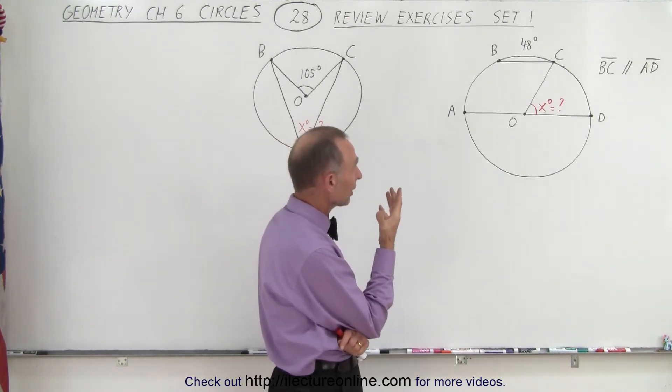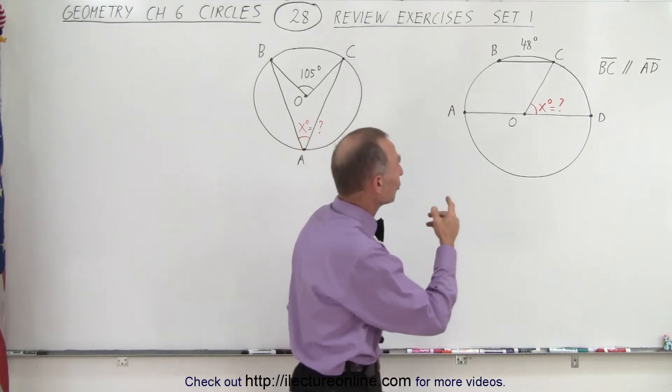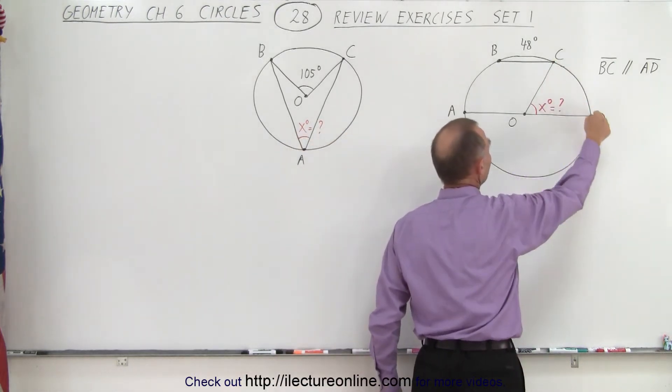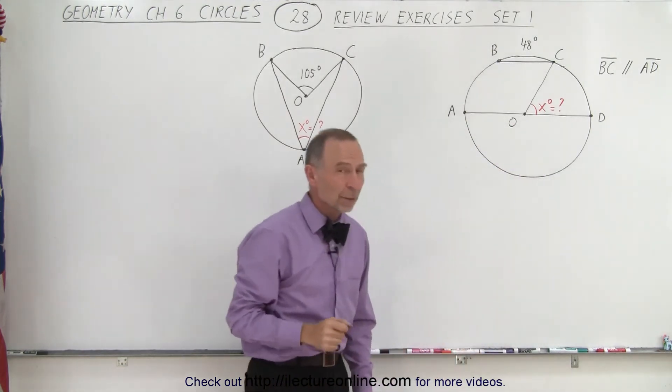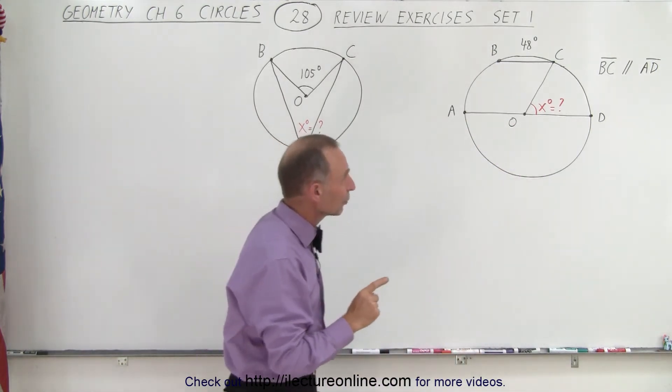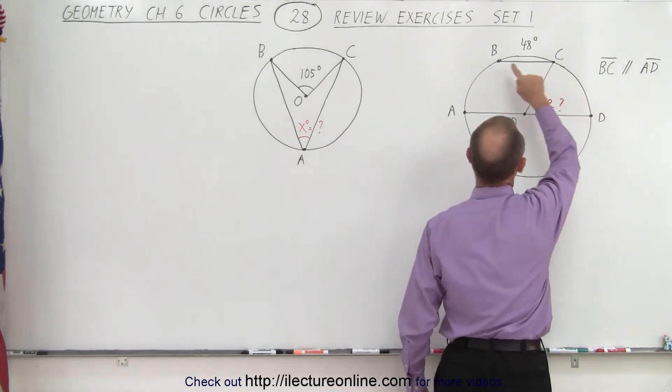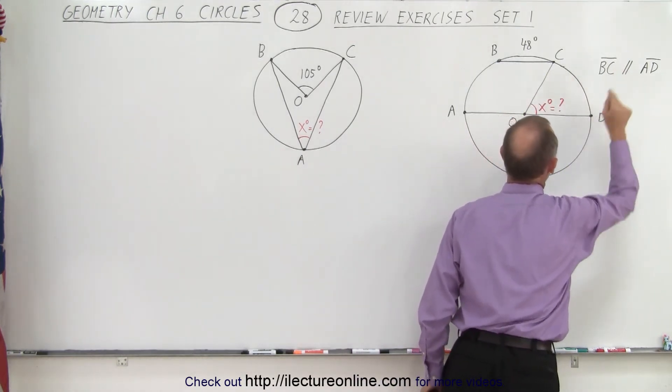You look at it and wonder how do I find the angle? Because I do not know the arc length from C to D, I do not know the arc length from A to B, so how am I going to figure that out? Well, it turns out we're given the clue that the line from B to C is parallel to the line from A to D.